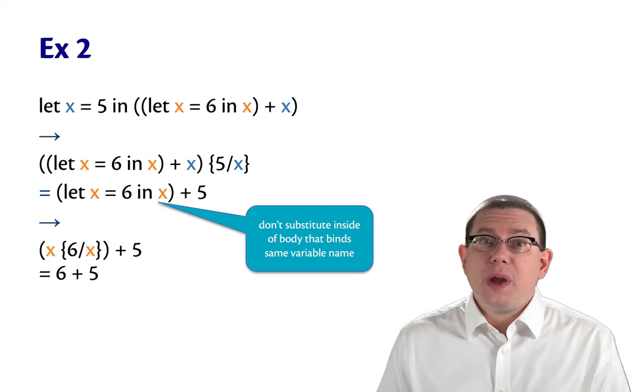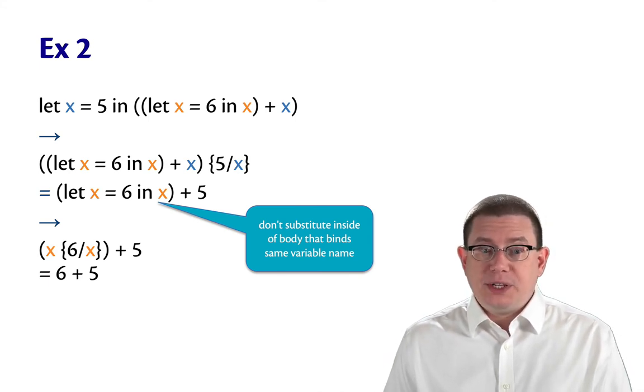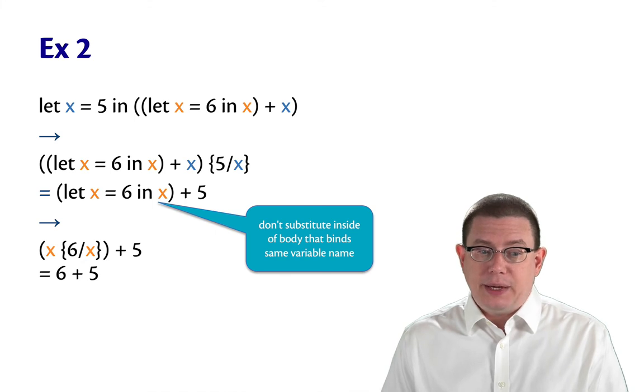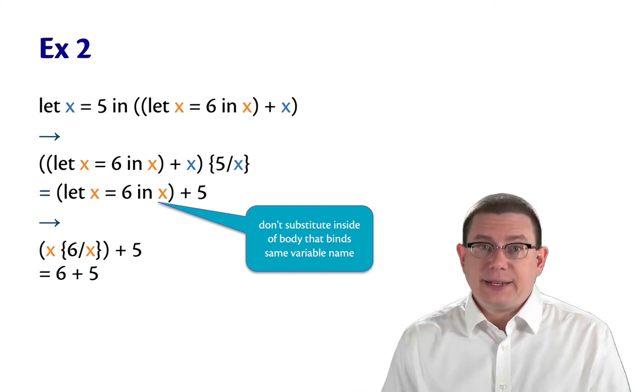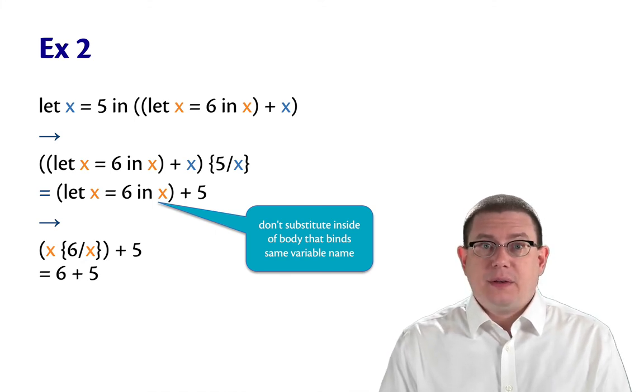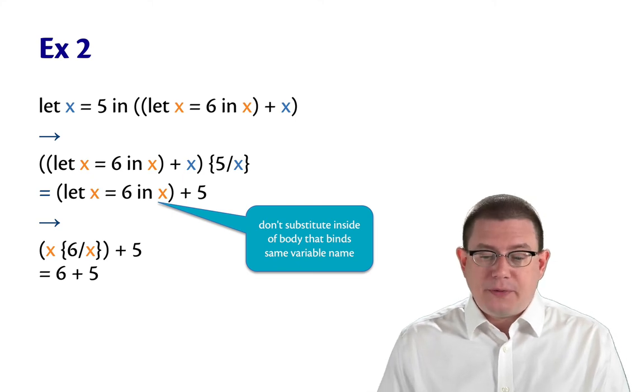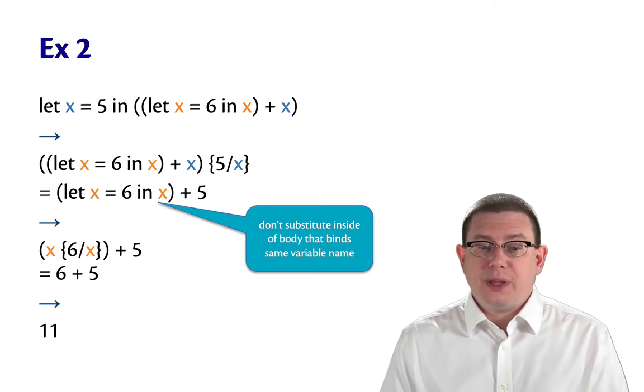Next, we evaluate that inner let expression by substituting 6 for x inside of its body. That means that x gets replaced by 6. And therefore, the final step of evaluation here is that the entire thing steps to 11.